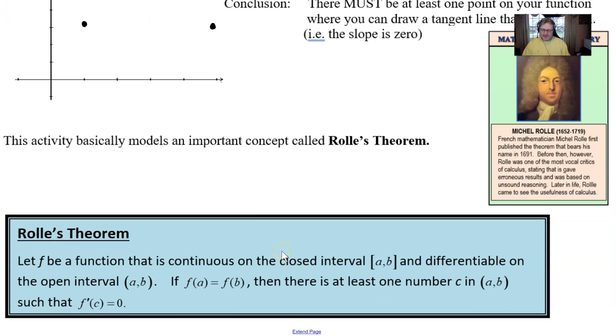It basically says if you've got a function f that's continuous on a closed interval [a,b] and differentiable on an open interval (a,b), we'll talk more about that as our time goes on throughout this video series. If f(a) is equal to f(b), then there has to be a number c in the open interval such that the derivative is equal to zero. That's basically it.